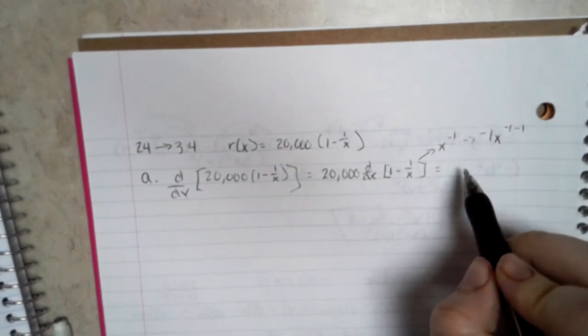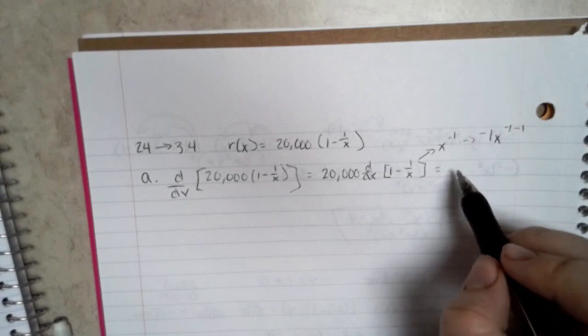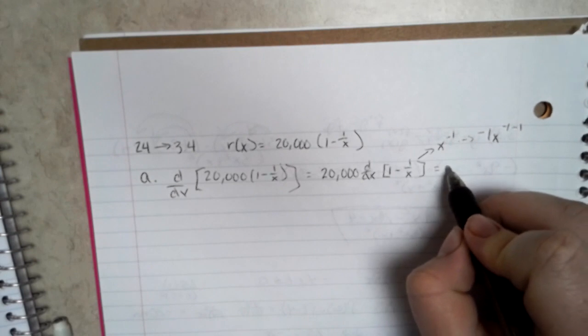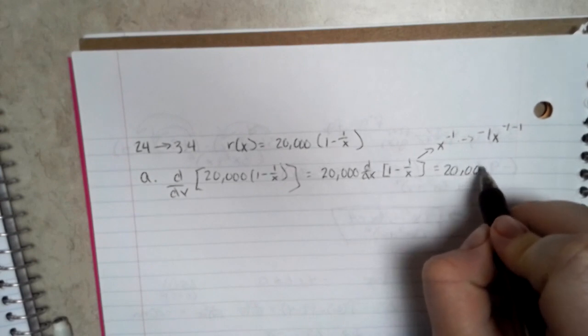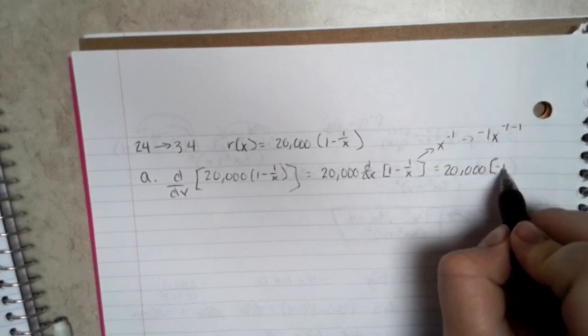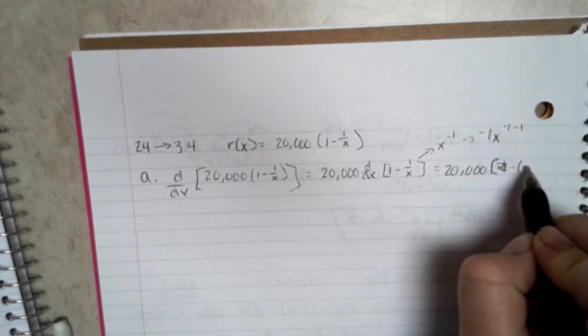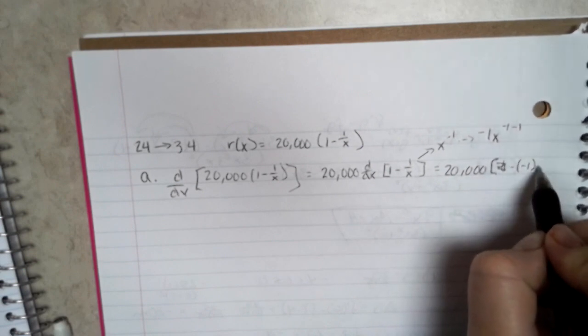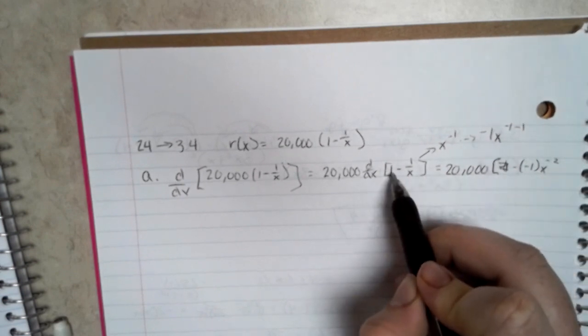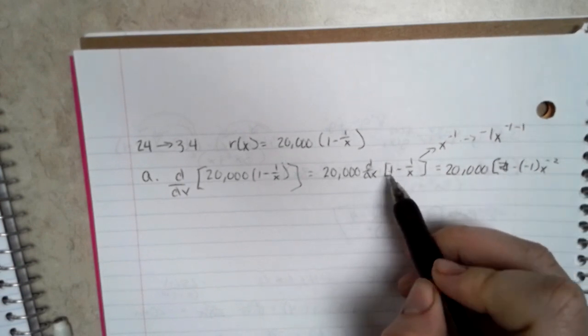So when it comes out, it will be negative x to the negative 2. And the derivative of the constant is 0, that's how I got rid of it there.